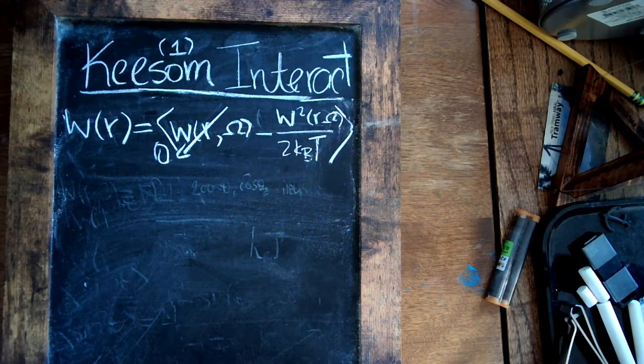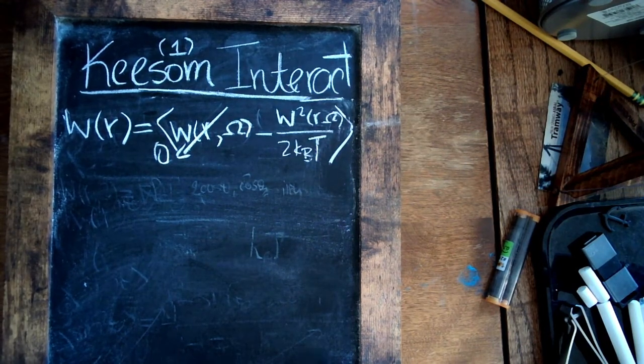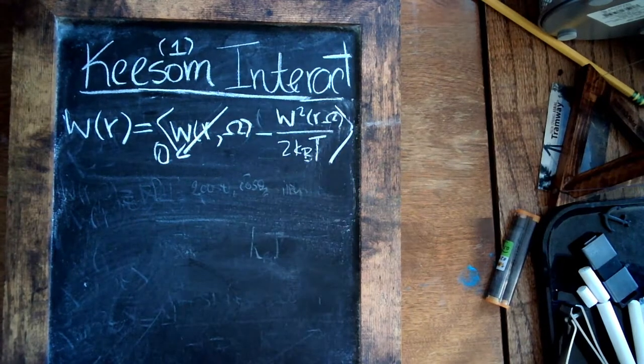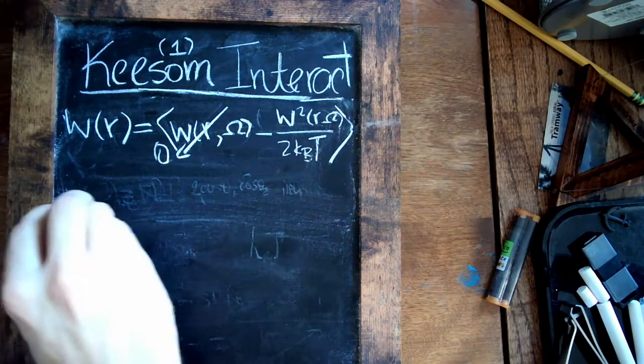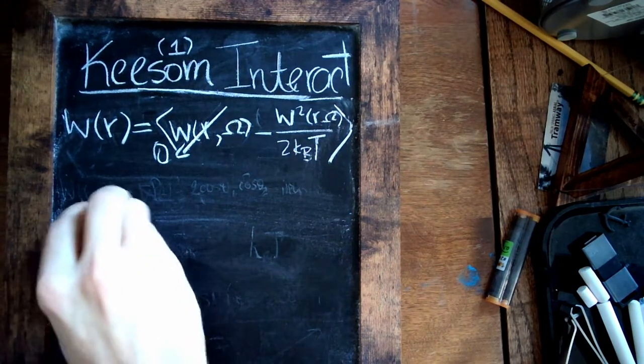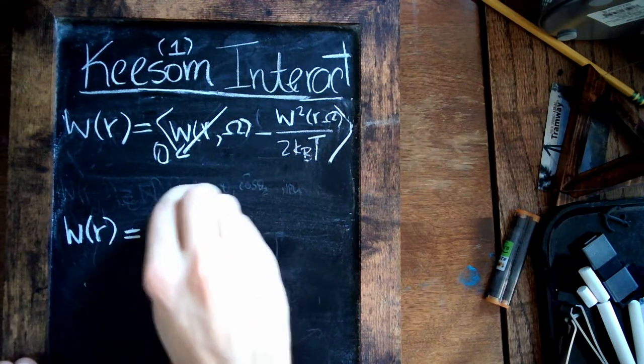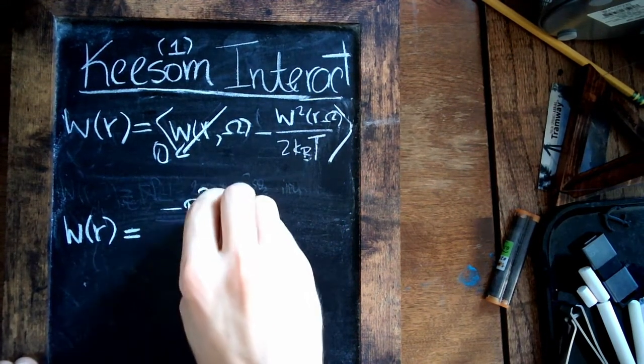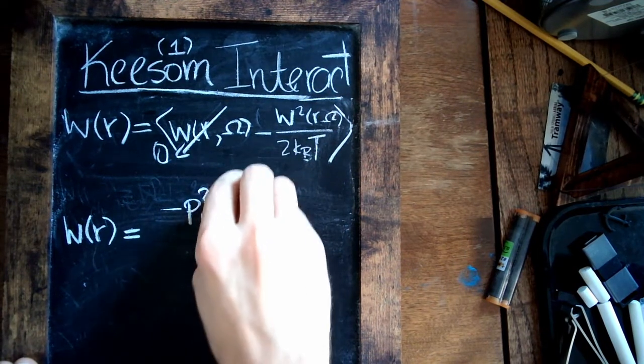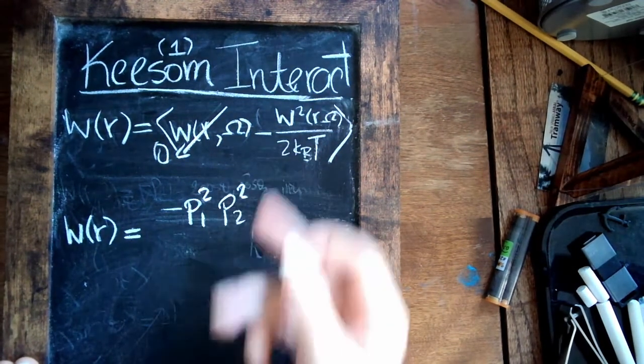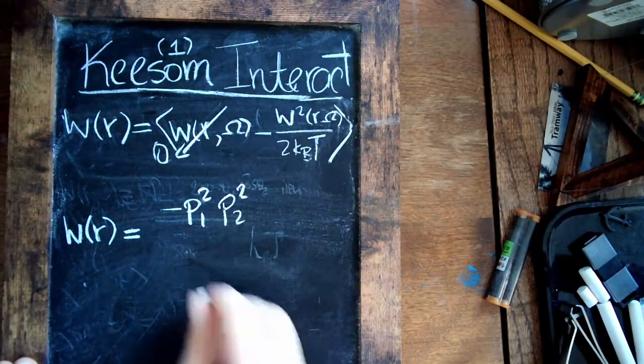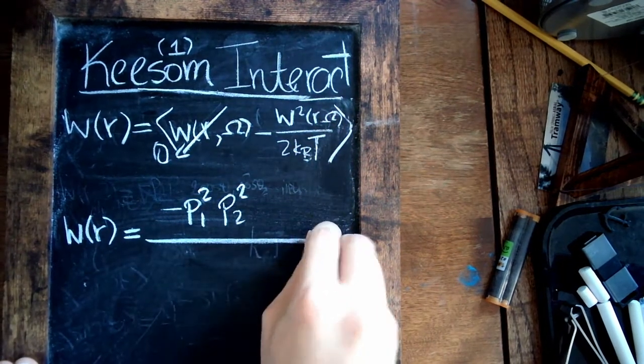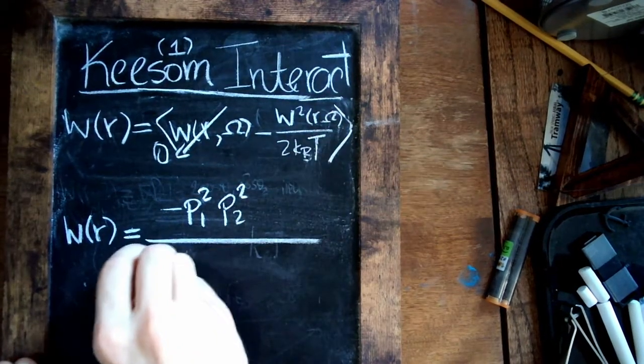So the final expression we're going to get after performing the average of the square term here, it's going to be just simply W(r). It's going to be equal to now the magnitude p1 squared times magnitude of p2 squared, since of course we're looking at the squared term.